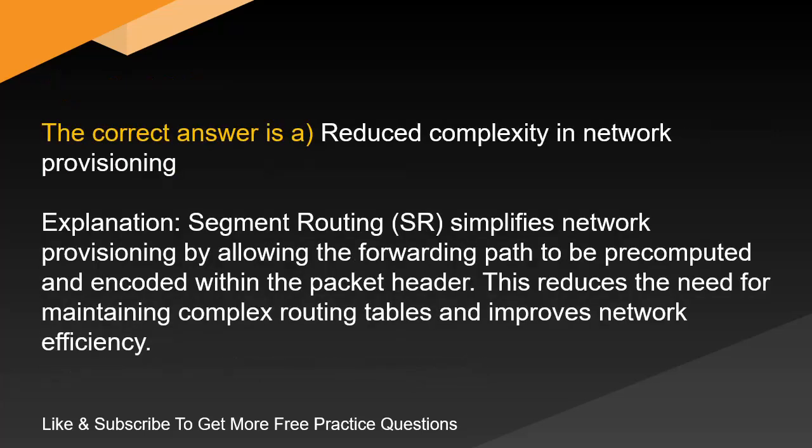The correct answer is A. Reduced complexity in network provisioning. Explanation: Segment routing (SR) simplifies network provisioning by allowing the forwarding path to be precomputed and encoded within the packet header. This reduces the need for maintaining complex routing tables and improves network efficiency.